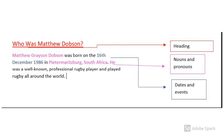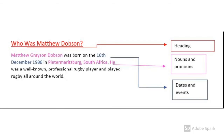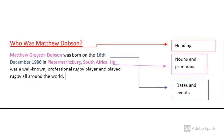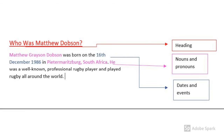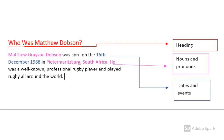So if we look at my first paragraph, I've changed it to 'Who was Matthew Dobson?' because that's who I'm writing about. That's my heading and I've used my nouns and my pronouns. I've said 'Matthew Grayson Dobson was born on the 16th of December 1986 in Pietermaritzburg, South Africa. He was a well-known professional rugby player and played rugby all around the world.' So I've also made use of the pronoun 'he' and I've used some dates that are important.